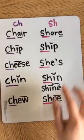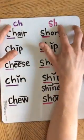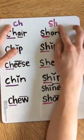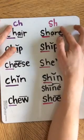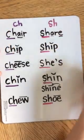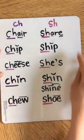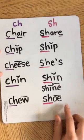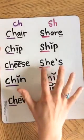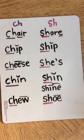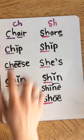So do you remember what these two are called? CH and SH — they're called digraphs, two letters that represent one sound. So in all of these words, this first digraph just represents one sound.